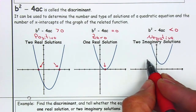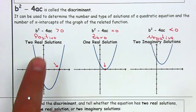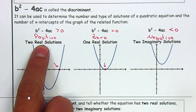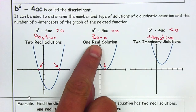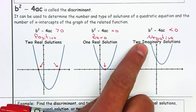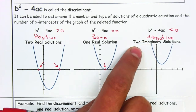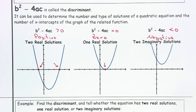So the solutions will have an i as part of them. To summarize: if the discriminant is positive, you have two real solutions; if it's equal to 0, you have one real solution; and if it's negative, you're going to have two imaginary solutions.